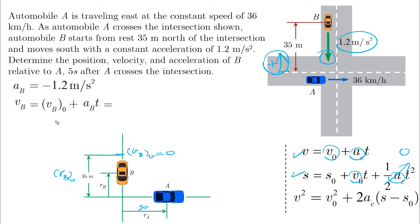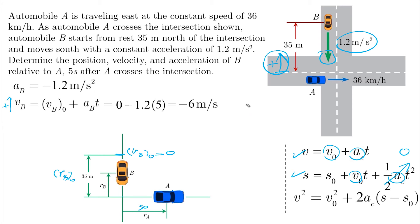Using the velocity equation — VB equals VB-naught plus AB times T, assuming positive up — we get 0 minus 1.2 multiplied by 5, which gives us minus 6 meters per second, or 6 meters per second in the downward direction.